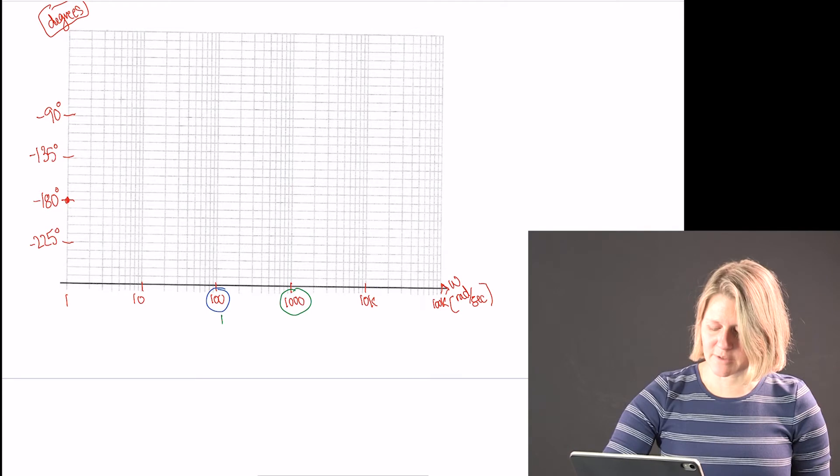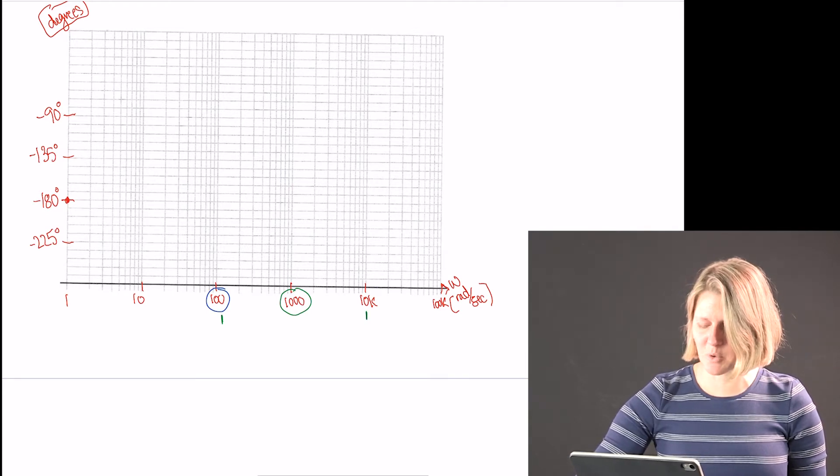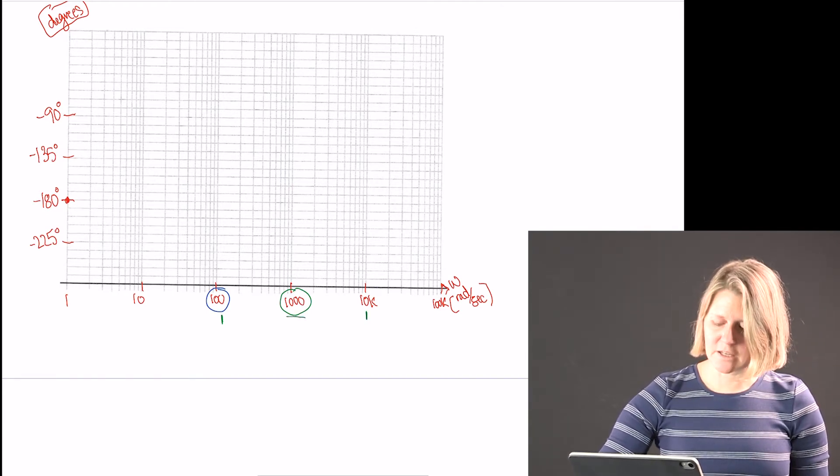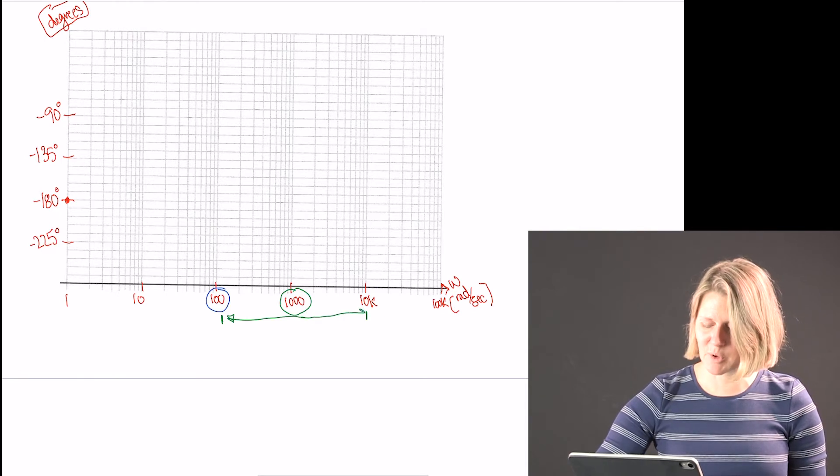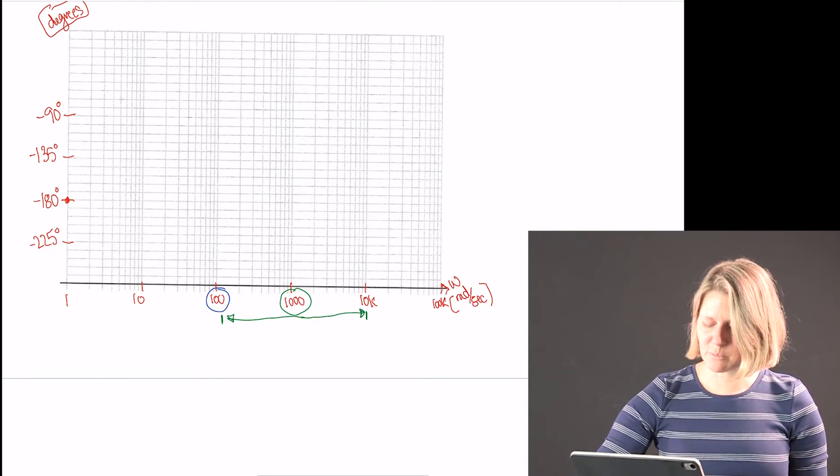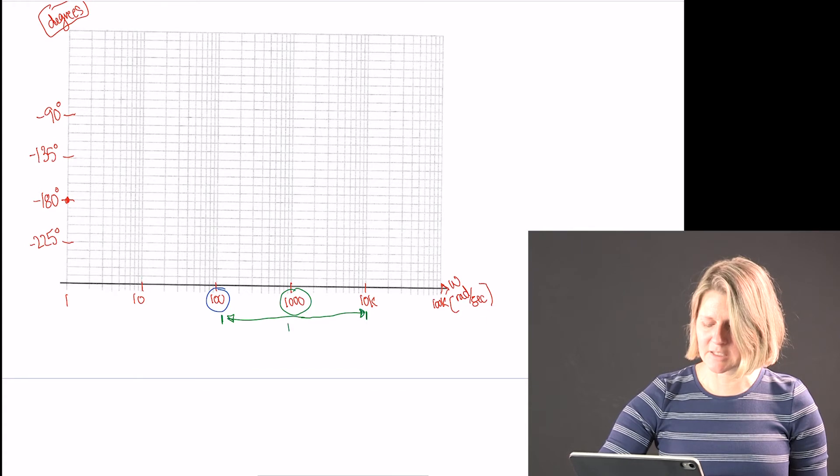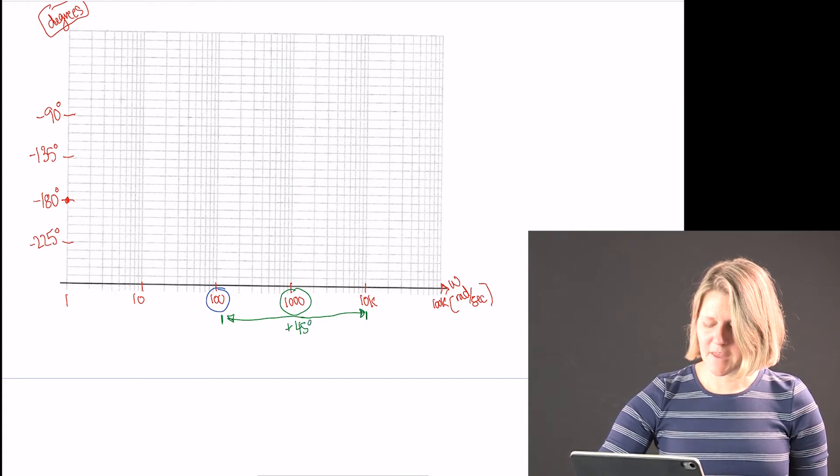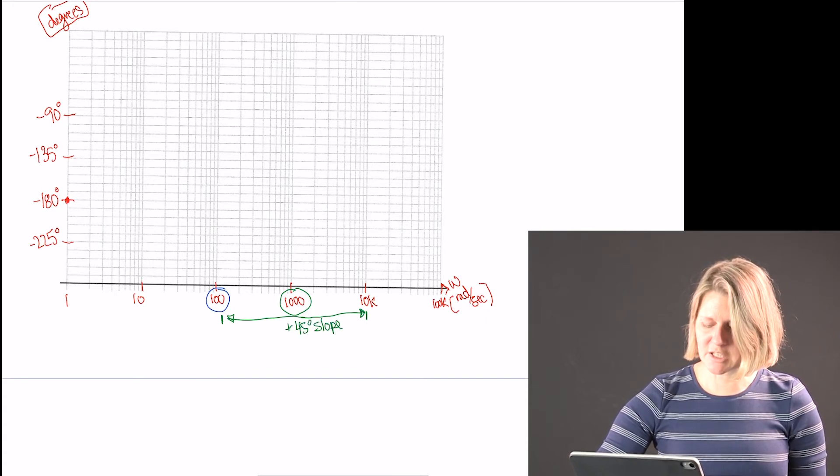So from 1000 we're going to have one decade before divide, meaning 1000 divided by 10 gives me 100. 1000 multiplied by 10 gives me 10k. And that change is 20 dB per decade.